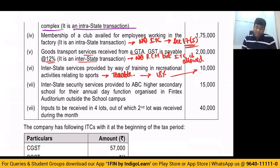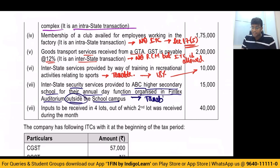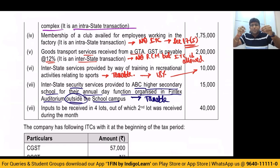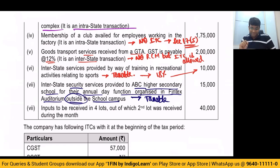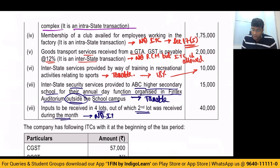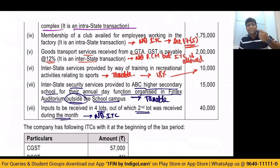Interstate security service provided to ABC Higher Secondary School for their annual day function organized in a FinTech's auditorium outside the school campus — this point also will become taxable, because security, cleaning, and housekeeping services are exempt only when they are performed within the educational institution. If they are performed outside the educational institution, it will definitely become taxable — so no question of exemption, this point becomes taxable. Inputs to be received in four lots, out of which only the second lot was received during the month — no input tax credit, because in case of goods received in lots or installments, credit can be taken only upon receipt of the last lot or installment. Out of four lots, only the second lot has been received, so credit will be claimed only when the last lot is received.